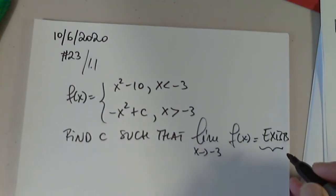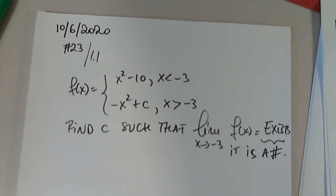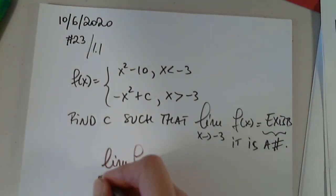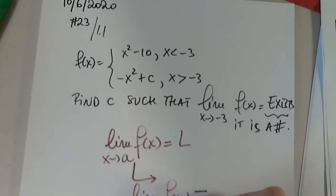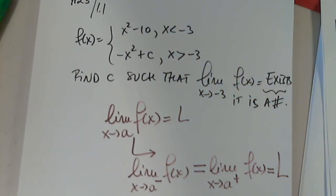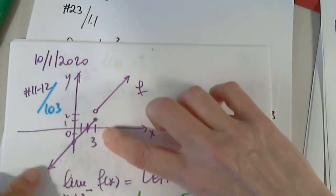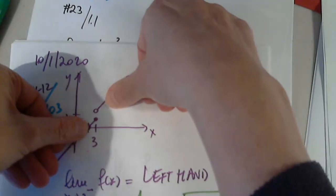By the word 'exists,' we mean it is a number. By definition, when we say that the limit of a function as x approaches a from either side is L, we indirectly mean that the limit of f of x as x approaches a from the left equals the limit as x approaches a from the right, and it equals L. For example, the limit from either side of 3 does not exist because the left limit is 1 and the right limit is 2.